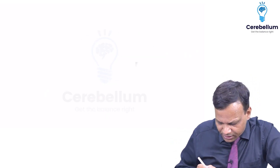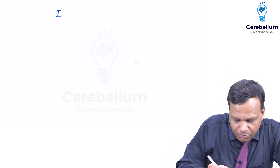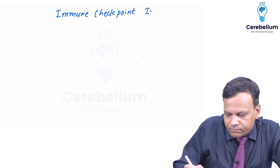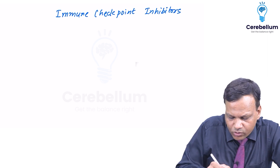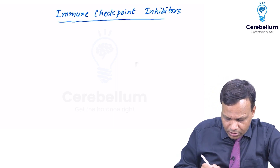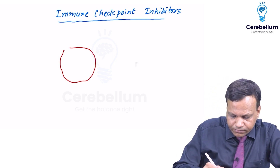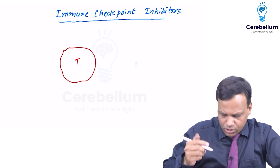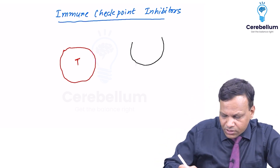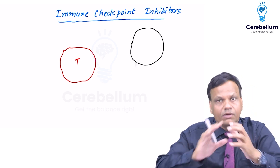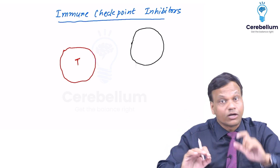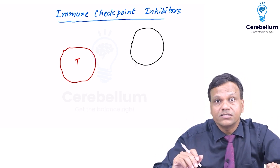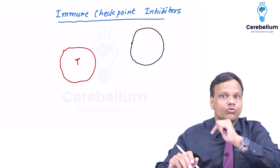Moving to one last concept in targeted drugs, these are called immune checkpoint inhibitors. First, we will try to understand the meaning of this. This is our T cell. We know the function of T cell is to kill the tumor cell — it kills many other cells also, but tumor cells as well. The problem is T cell kills a tumor cell but not a normal cell. So what is the difference between a tumor cell and a normal cell? Mostly tumor cells are very similar to normal cells, so how does T cell attack only the tumor cell and not the normal cell?